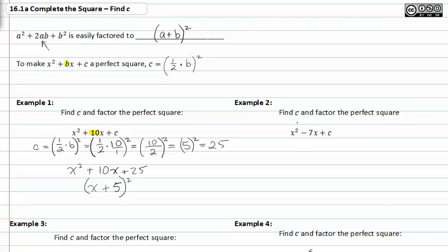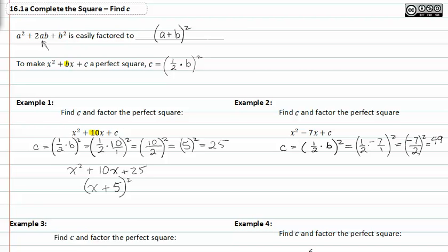In example two, we have to find c as well. We know that c represents one-half multiplied by b squared, or one-half b squared. Substituting negative seven in for b, we get one-half times negative seven over one, squared, which is equal to negative seven over two. We still have to square that to get forty-nine, and that's positive over four. So c represents forty-nine over four.